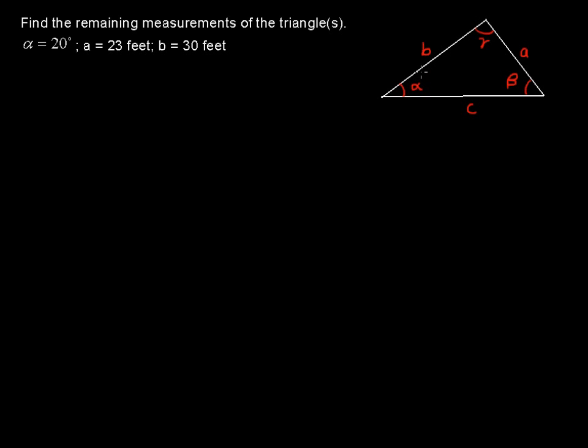We're actually going to have two triangles here. This is called the ambiguous case because if you were to drop down a line here and call this H, you would find this H by saying sine of 20 degrees, I'll write it down.